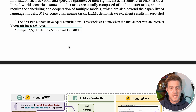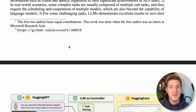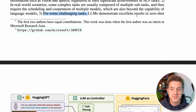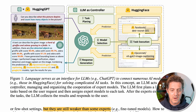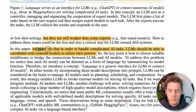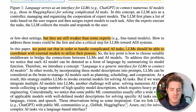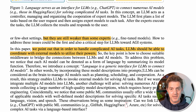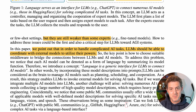This paper also talks about generalized models being really good at a lot of things, but specialized models being better at specialized things. It says right here: 'For some challenging tasks, LLMs demonstrate excellent results in zero-shot or few-shot settings, but they are still weaker than some experts' — and by experts, they're talking about fine-tuned models. It says, 'We point out that in order to handle complicated AI tasks, LLMs should be able to coordinate with external models to utilize their powers.' So the generalized model should be the orchestrator, and the specific fine-tuned model should do what they're best at — specific tasks for very specific queries.